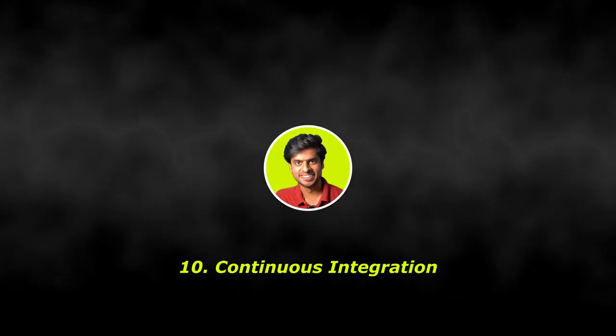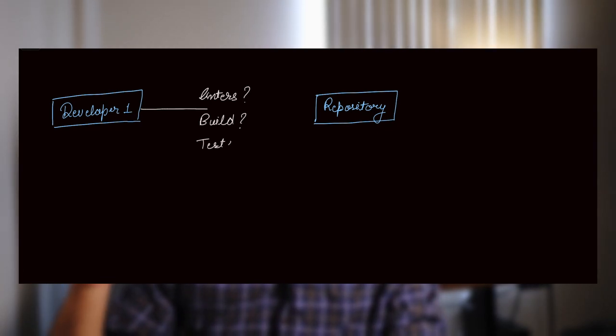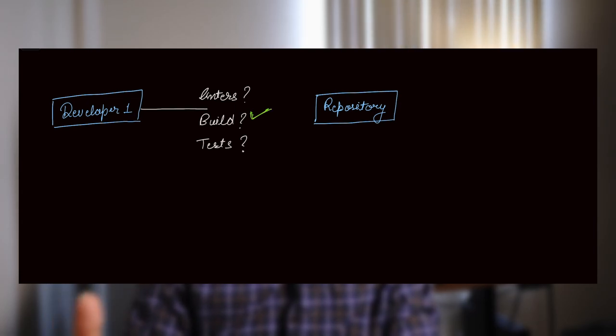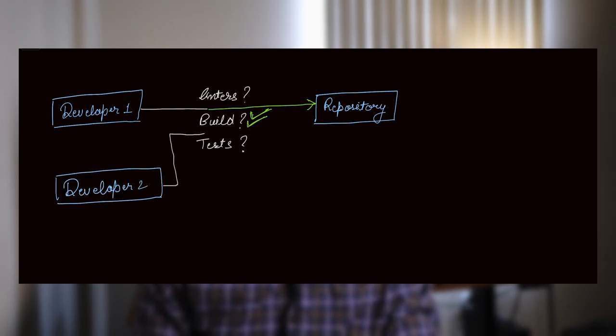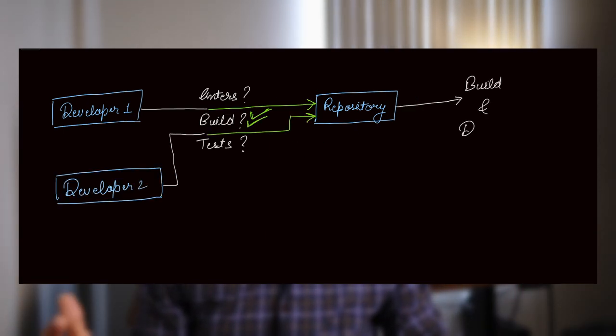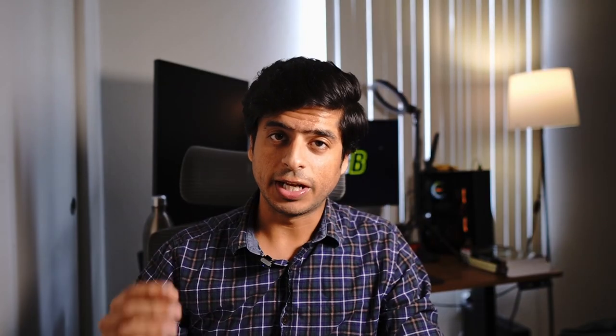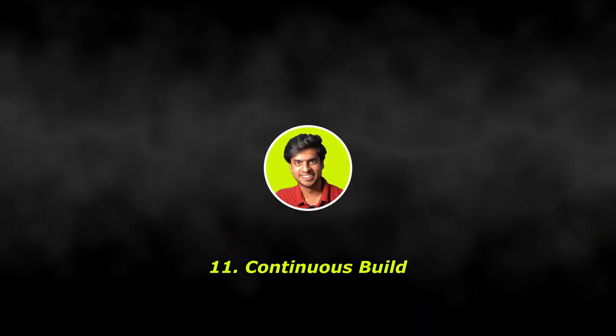Tenth: continuous integration, or CI. CI is a software development practice of integrating work frequently. In other words, when code sent by every engineer is verified by automated static analyzers, is automatically built and tested before and sometimes after merging to the repository, and is automatically released to the public — this entire process is called continuous integration. It helps avoid merging changes that can break the build and streamlines the entire lifecycle.